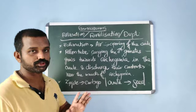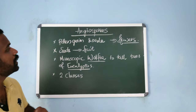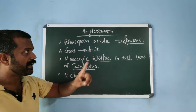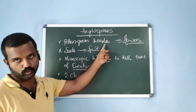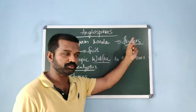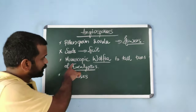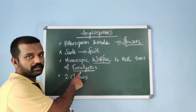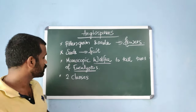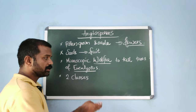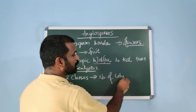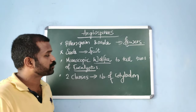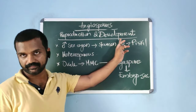Next, angiosperms: the word itself means 'angio' = covering, so the seed is enclosed in a fruit. They are flowering plants — pollen grains and ovules are produced inside specialized structures called flowers. Angiosperms range from microscopic wolfia to the tall trees of eucalyptus, which is the tallest angiosperm. Angiosperms are grouped into two classes based on the number of cotyledons: monocots (single cotyledon) and dicots (two cotyledons).